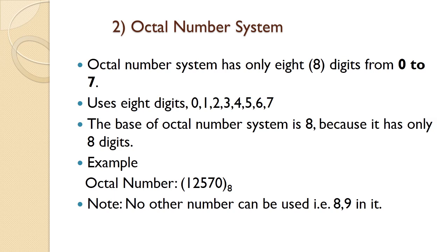Octal number system has only eight digits from 0 to 7 — that is 0, 1, 2, 3, 4, 5, 6, 7. Its base is 8 because it has only eight digits. For example, 1, 2, 5, 7, 0. No other number such as 8 or 9 can be used in the octal number system.